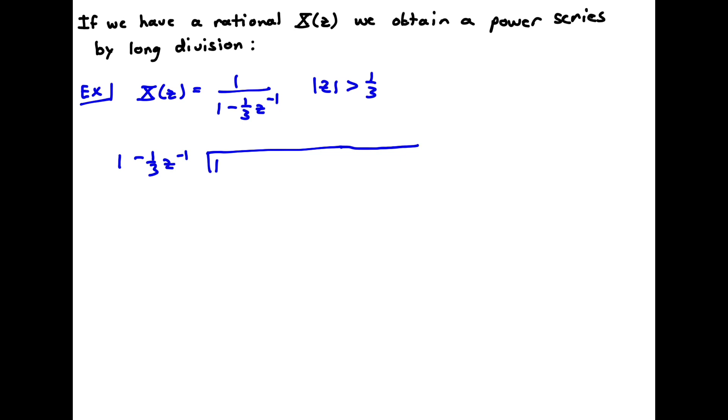Okay, so to get a 1, I put a 1 there. 1 times 1 is 1. 1 times minus a third z inverse gets me minus a third z inverse. So I subtract off here, and I get 1 minus 1, that's 0. And then I'll be left with plus 1 third z inverse here. Okay, so now I need a plus 1 third z inverse. Well, to get that, I multiply 1 by a plus 1 third z inverse. So 1 third z inverse times 1 gets me a third z inverse. And a third z inverse times minus a third z inverse gets me minus 1 ninth z to the minus 2.